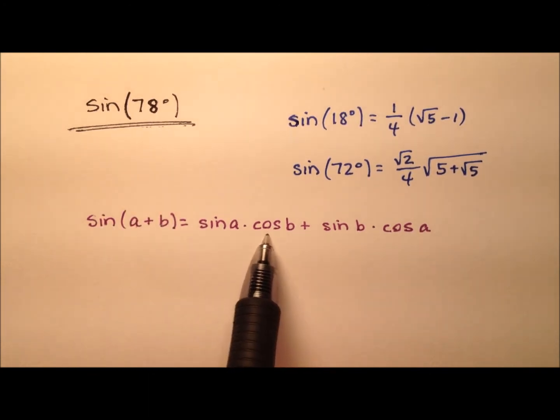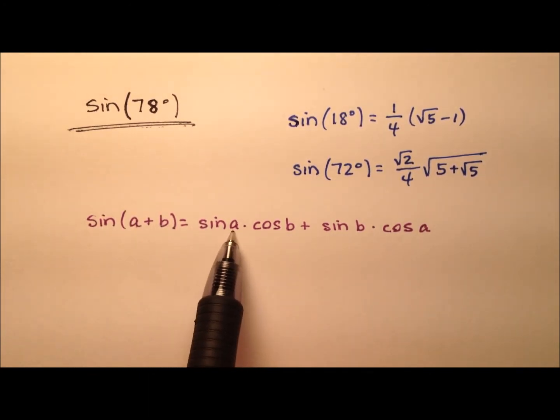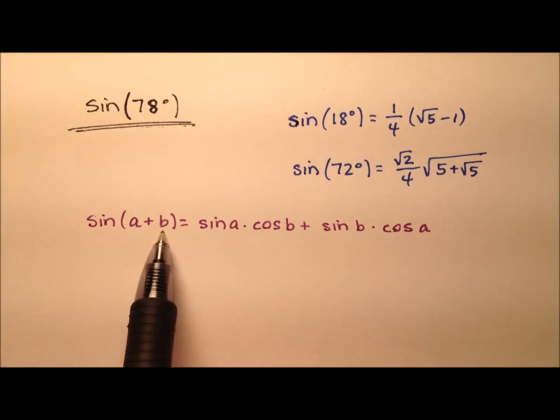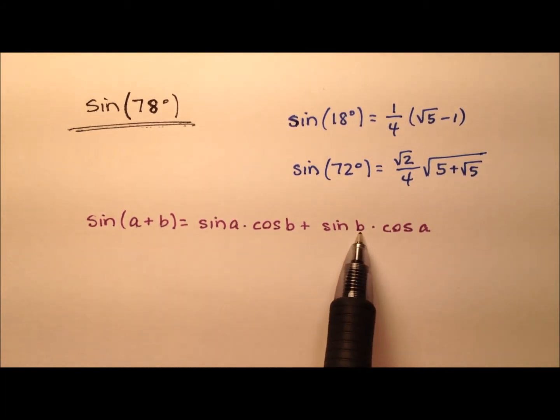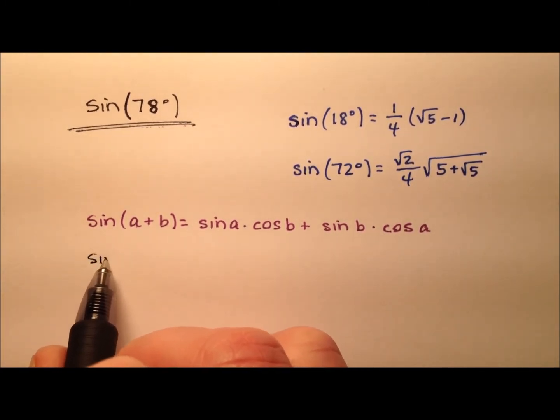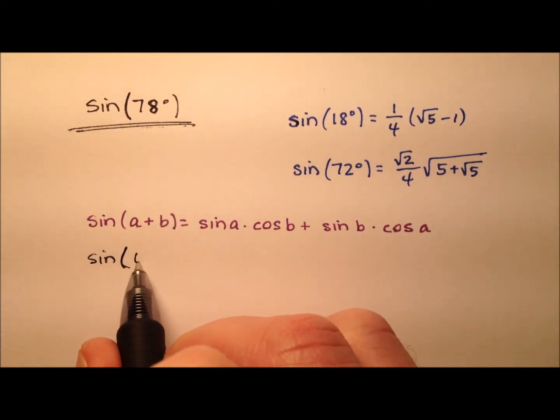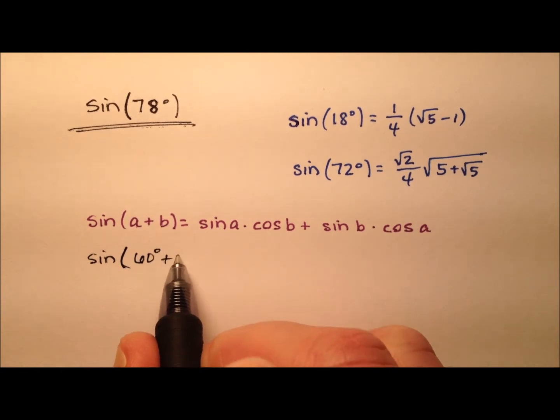Then, we're going to use this expansion here: the sine of a, which is that first angle, times the cosine of b, which is the second angle, plus the sine of b times the cosine of a. Two angles that are going to be nice to use and that add up to 78 degrees - let's go ahead and use 60 degrees and 18 degrees.